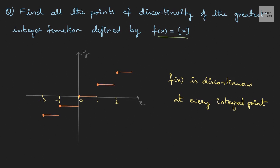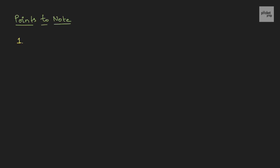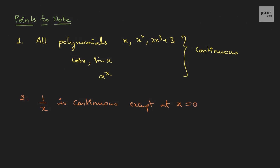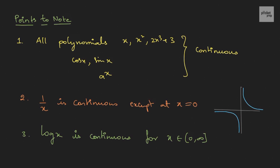Before moving further, here are important points to note. First, all polynomials like x, x², 2x³ + 3, as well as cos x, sin x, and aˣ are all continuous. Second, the function 1/x is continuous except at x = 0 — the graph clearly shows it is not continuous at 0. Third, log x is continuous for all x belonging to the open interval (0, ∞), as shown in the graph.